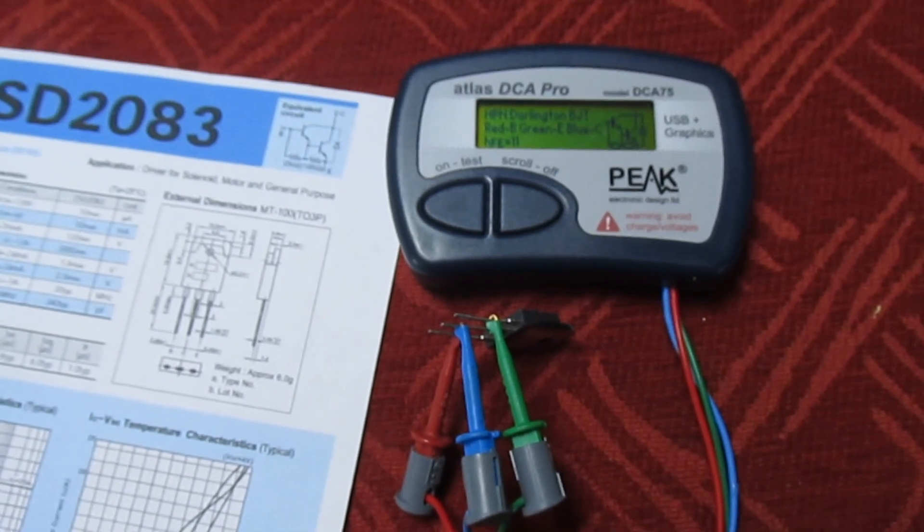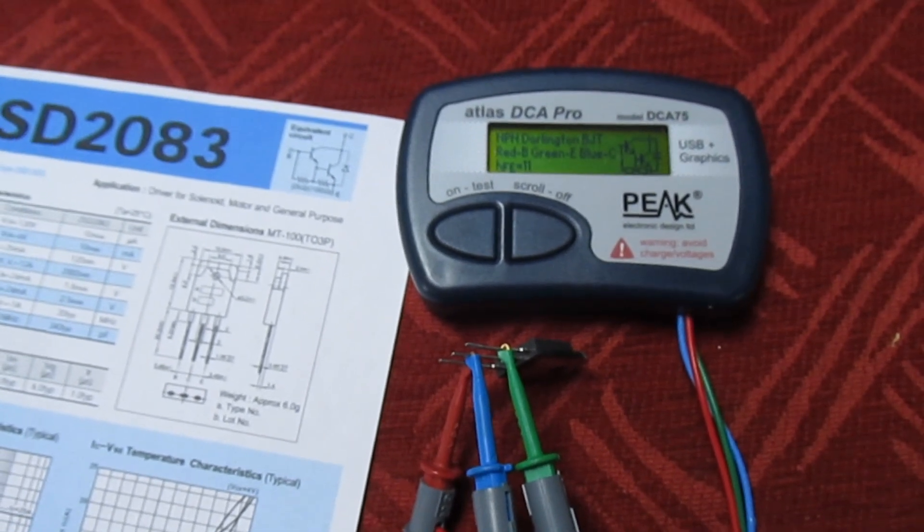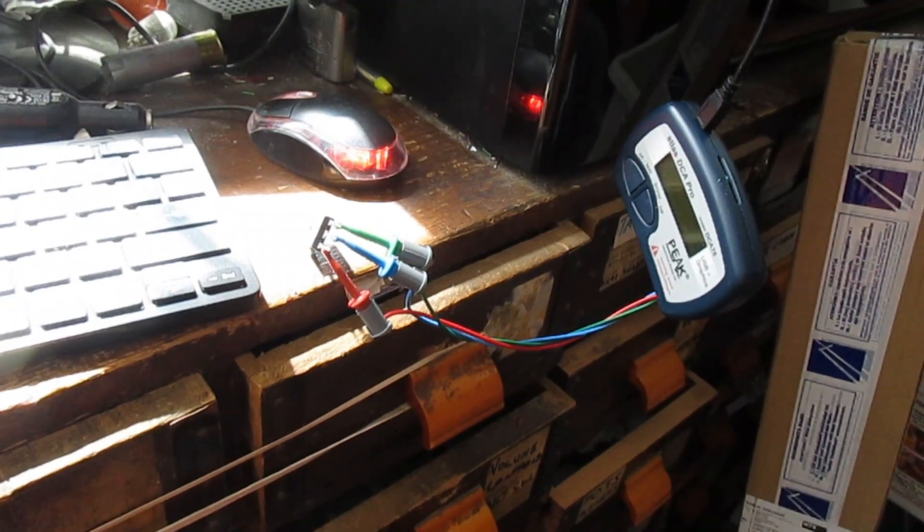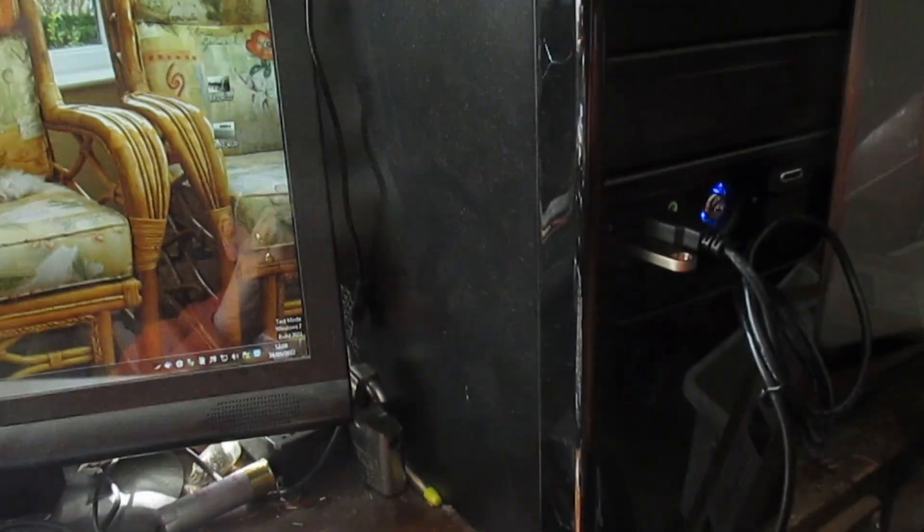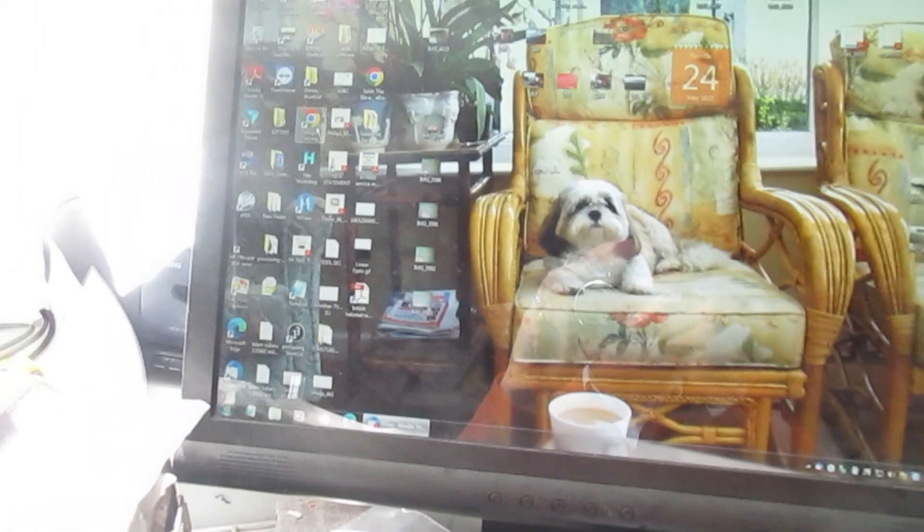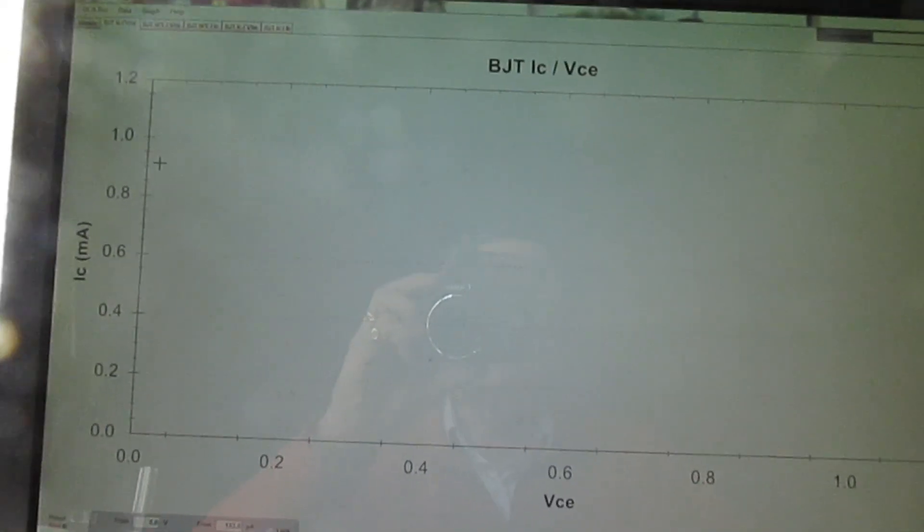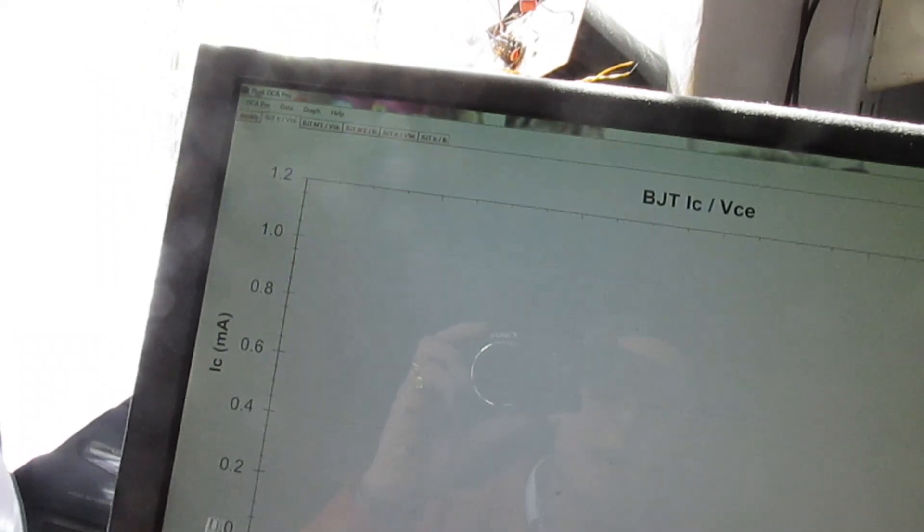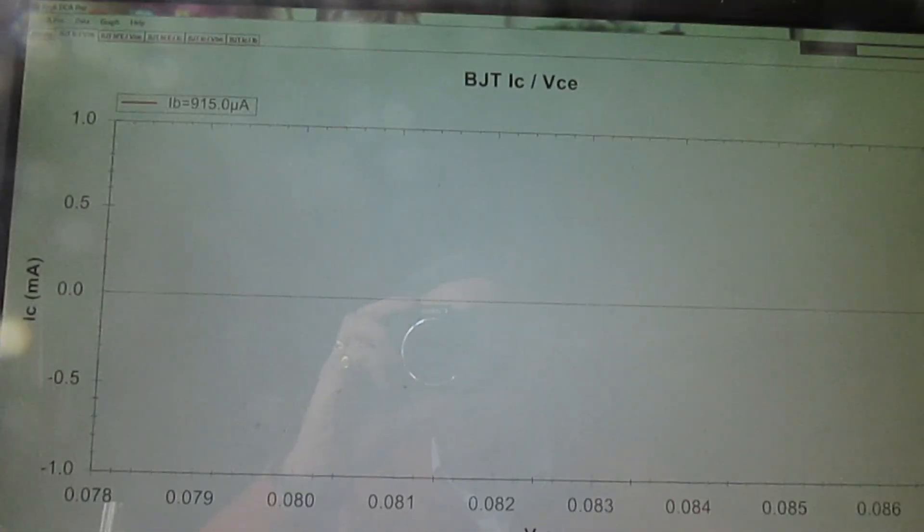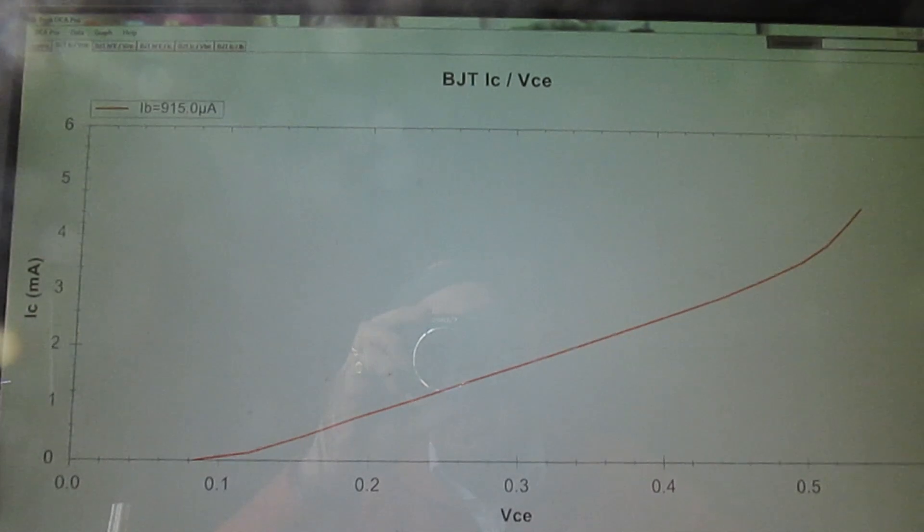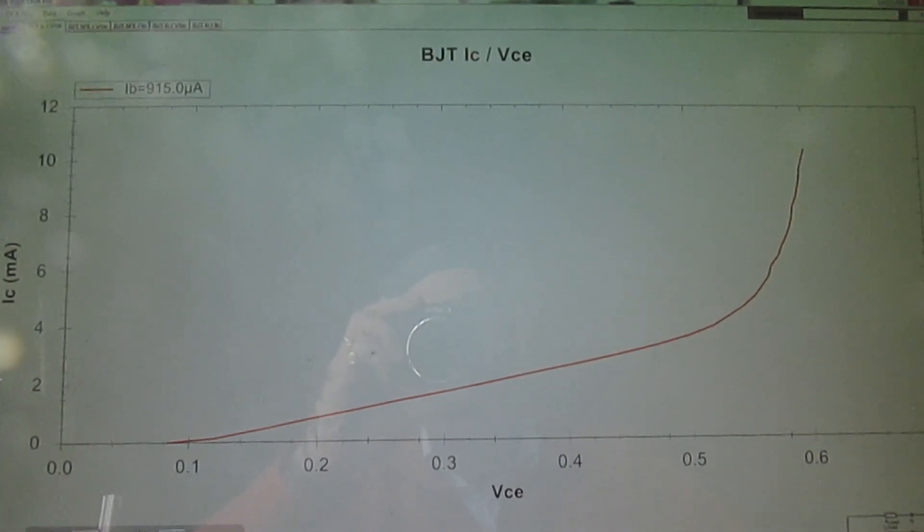Let's plug the Peak into my computer first so we get a bigger picture. This is the Peak Atlas DCA Pro with curve tracing on. Just plug it into the computer, I'll stop the camera while I load it up. So we connect to the computer, we load it up. I'll just give you a quick demonstration. We've got curve tracing on this but we don't need to concern ourselves with that.